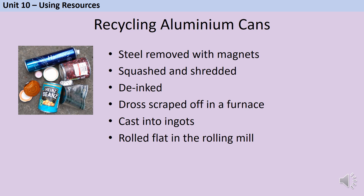Next, we'll look at how we can recycle three materials, starting with aluminium cans. When metal is recycled, it's often all put in together, so the first step is to isolate the aluminium. Big electromagnets remove all the iron and steel, leaving only aluminium cans behind. These are squashed and shredded into small pieces, then blasted with hot air to remove labels and ink. The pieces are fed into a furnace at about 750°C to melt the aluminium. Impurities, called dross, rise to the surface and are scraped off. The pure aluminium cools and is cast into ingots, which are sent to a rolling mill and flattened into thin sheets for making new cans.